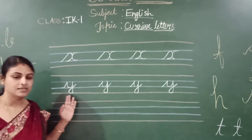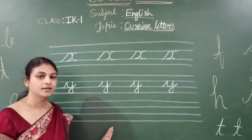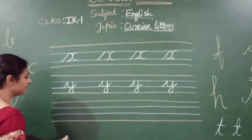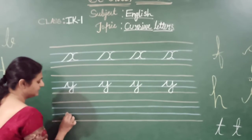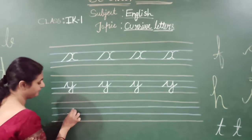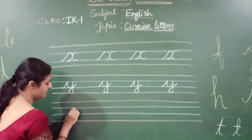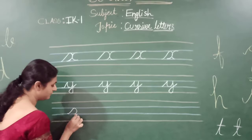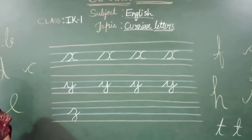Ok children, easy you know. Now X, Y — what is the next letter? Z, right. Four line format, start from this third line. Slant. Make a backward curve. Another backward curve. This is the letter Z.